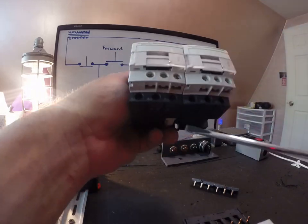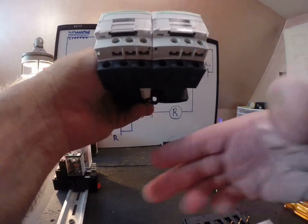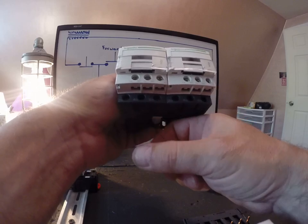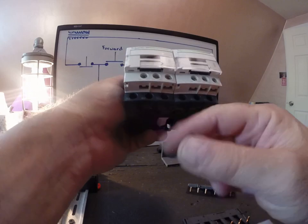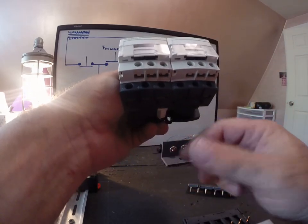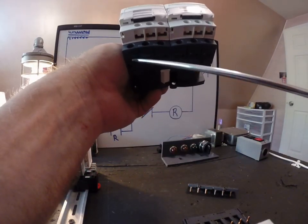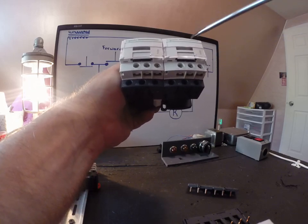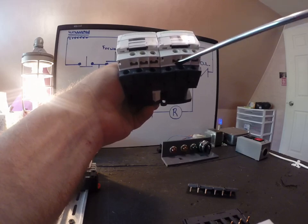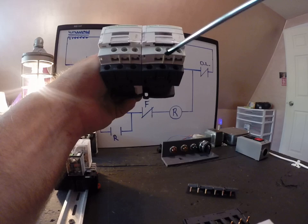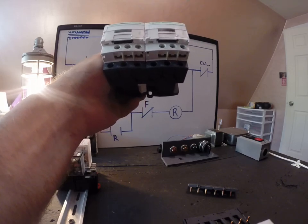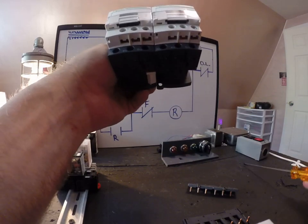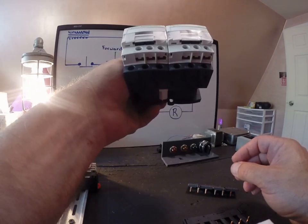The other thing that's on this contactor that I don't have right now is the overload block. And that overload block would simply snap into these bottom three terminals. And it would look something like this, small and square, and it would snap right into the base. And like the old, that other contactor that we saw, it had the adjustable dial for the overload. Well, that would snap in there. And then you'd have overload protection because our feed is still only coming out of three wires.